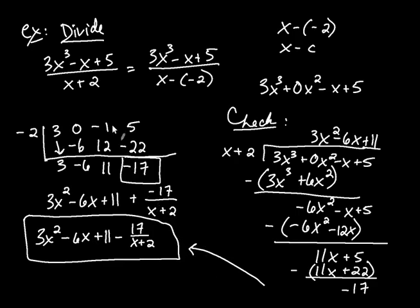So in other words, synthetic division is just a fast way of performing division. You don't have to use long division. But it only works when you have x minus c in the denominator. So that's how synthetic division will always go.